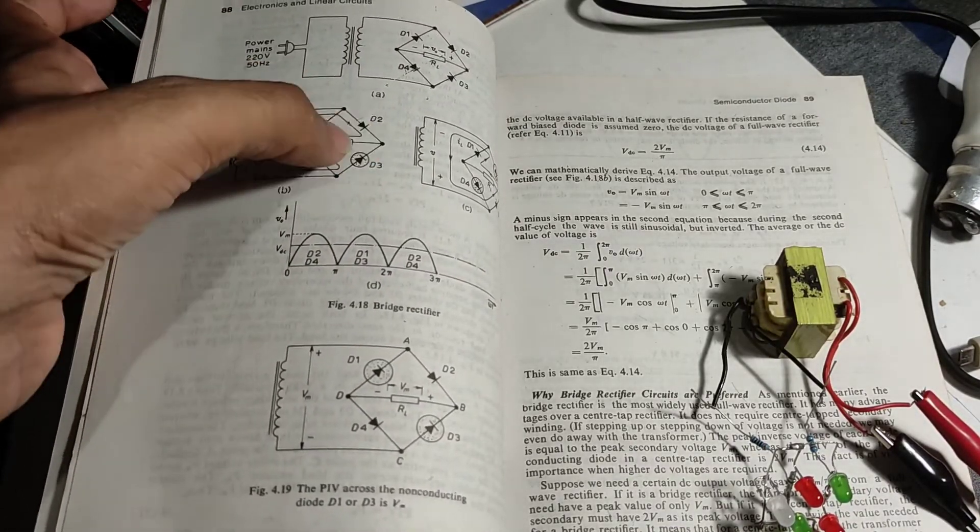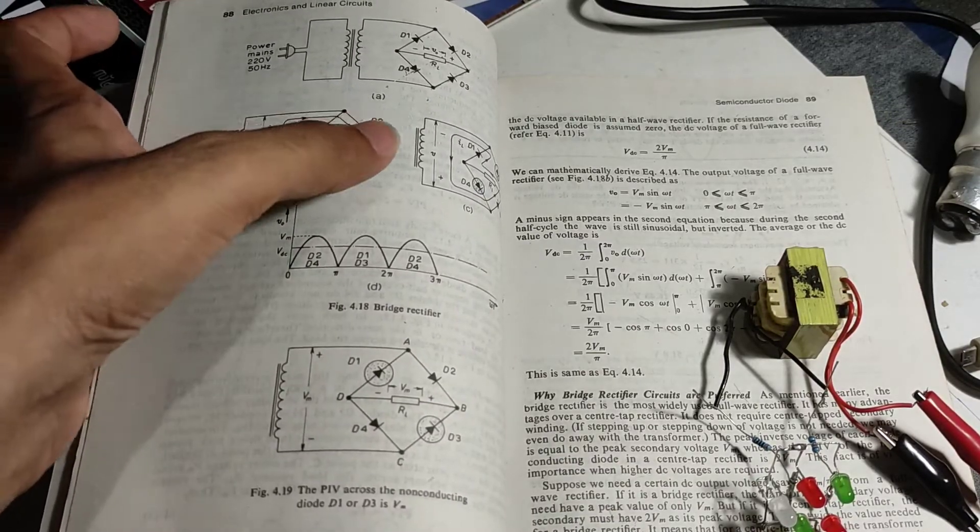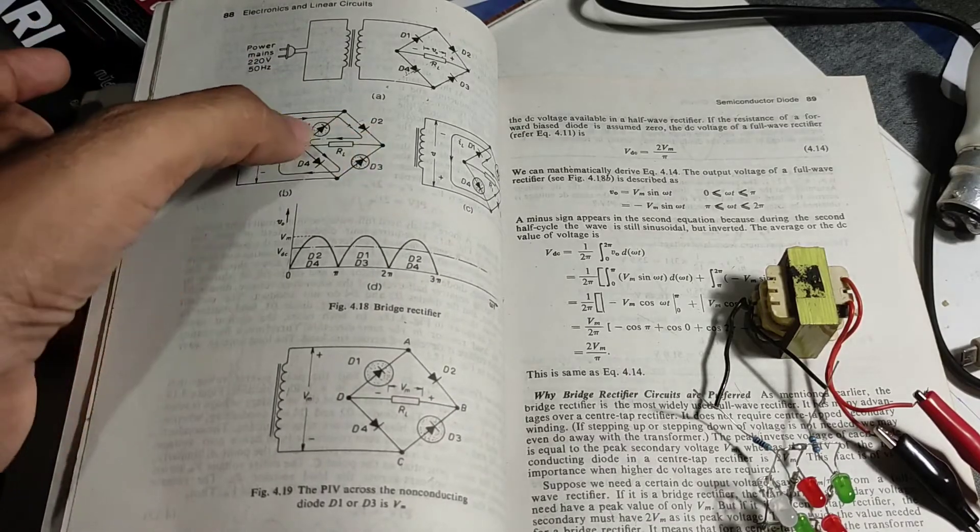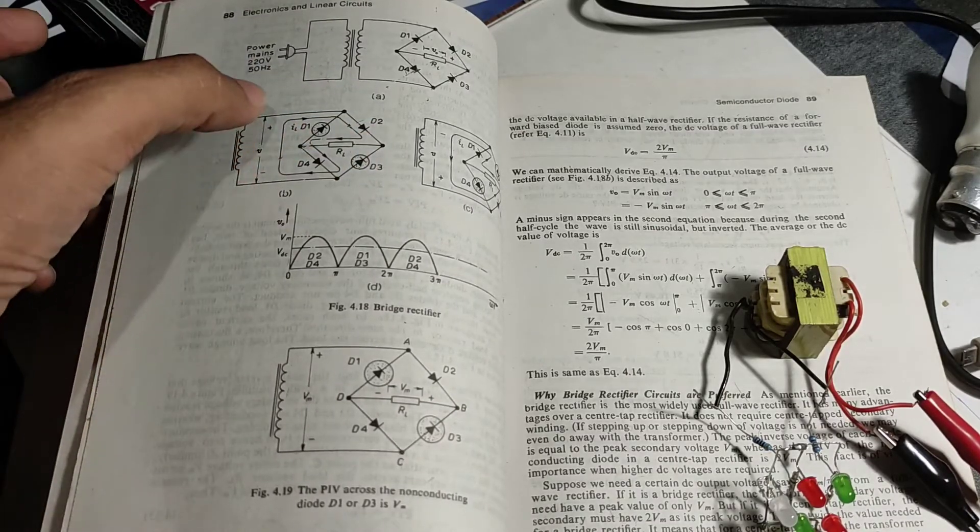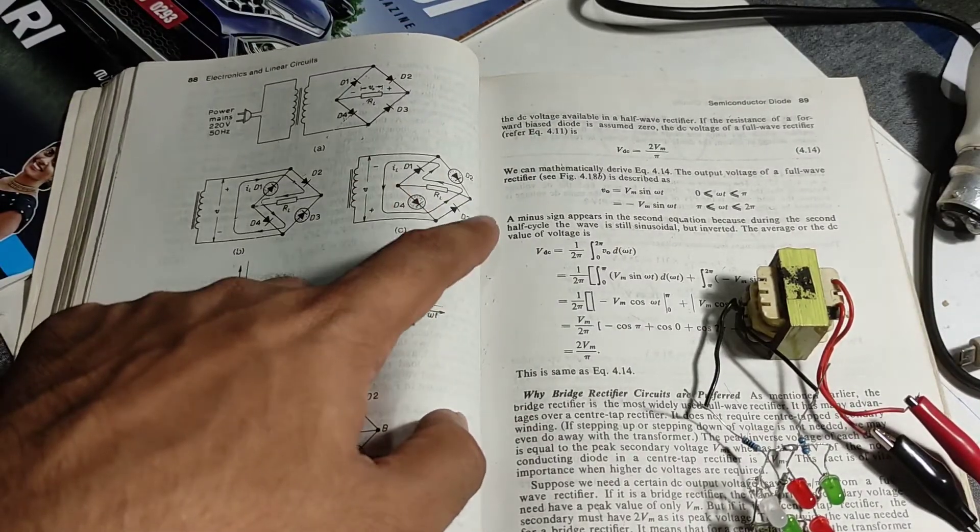Then these two diodes are going to conduct through the load, keeping the polarity of this DC. It comes from here, passes through this diode, through the load, and this diode, and returns back to the source. Now when the bottom side becomes positive, these two diodes are going to conduct.